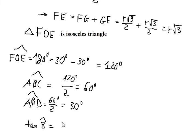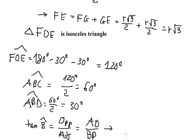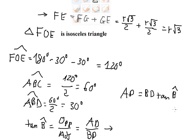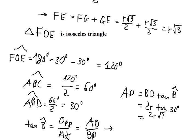Using tangent of angle ABD, we have opposite over adjacent — opposite is AD and adjacent is BD. BD equals 2R and the angle is 30 degrees. So we calculate AD and get AD equals 2R times the square root of 3 over 3.